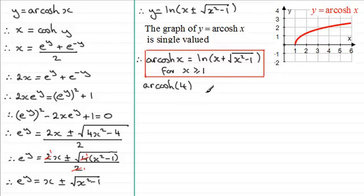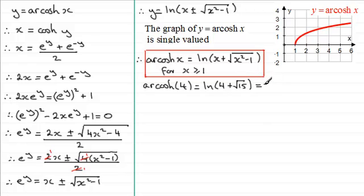By the formula, the inverse cosh of 4 equals the natural log of 4 plus the square root of 4 squared, which is 16, minus 1 — that's the root of 15. This turns out to be equal to approximately 2.06. And that value corresponds to the point on the graph, so you can see the positive value is giving us values on the upper branch.